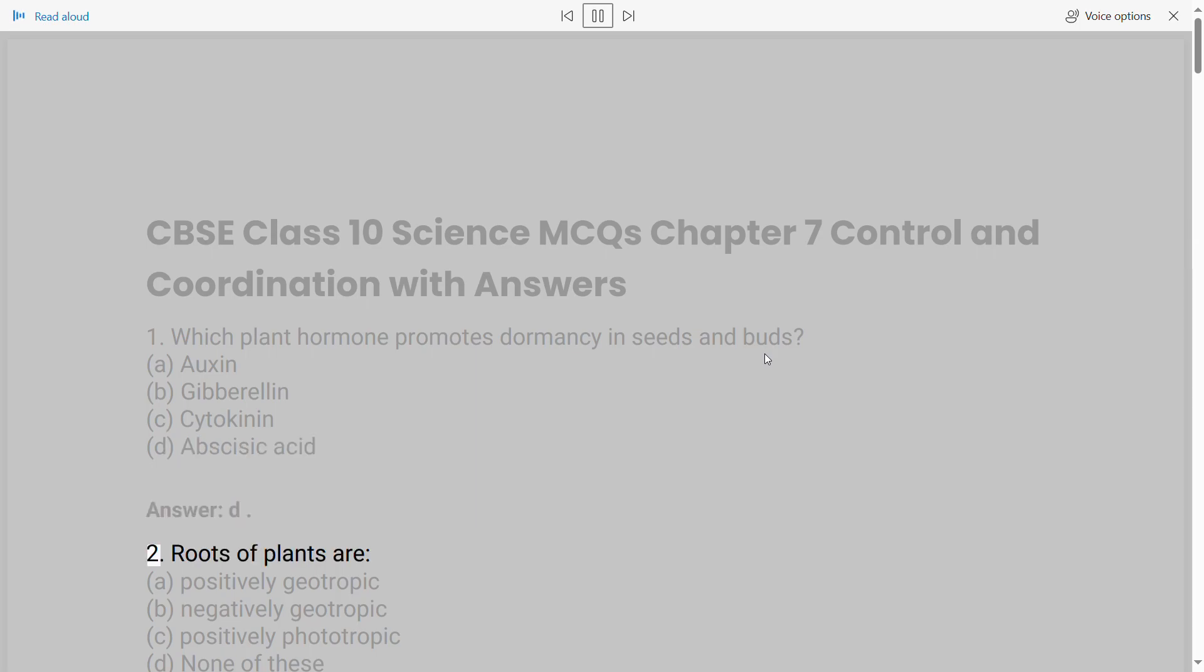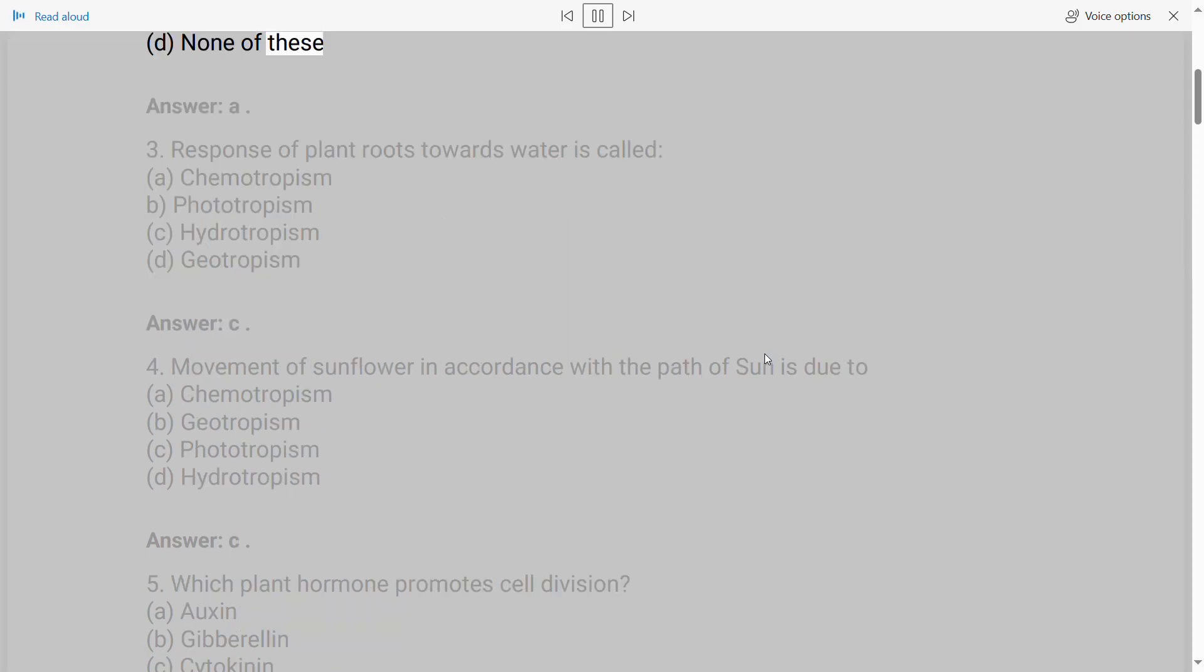2. Roots of plants are A. Positively geotropic, B. Negatively geotropic, C. Positively phototropic, D. None of these. Answer: A.